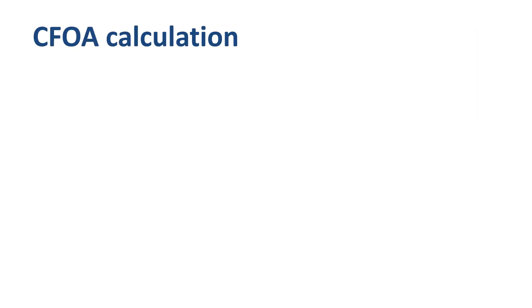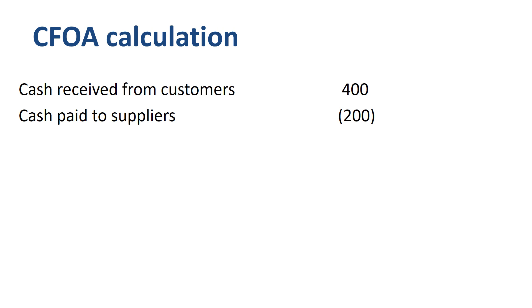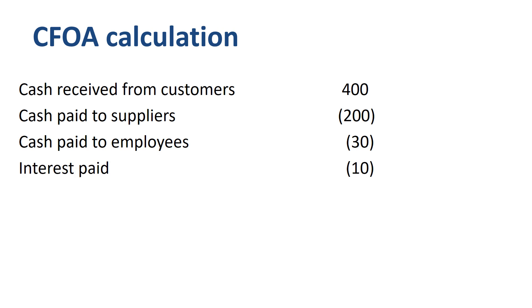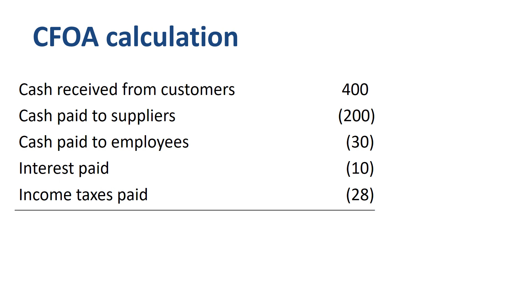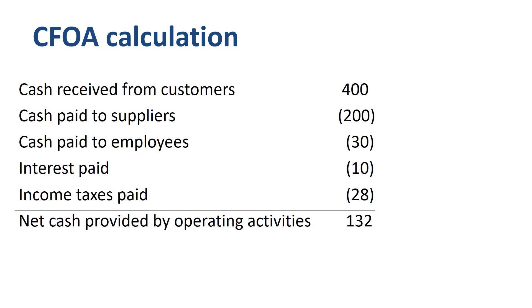Let's summarize the items we have found so far. In the direct method of cash flow reporting, you start off with cash received from customers of 400, deduct cash paid to suppliers 200, deduct cash paid to employees 30, interest paid 10, and income taxes paid 28. Total net cash provided by operating activities calculated using the direct method is 132, which should be the same if you calculate it using the indirect method — reconciling from net income to CFOA by adjusting for non-cash items in the P&L plus changes in working capital.